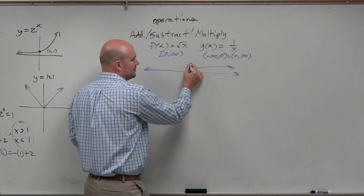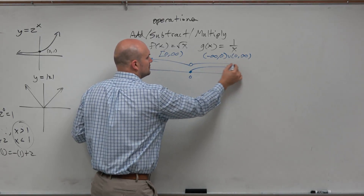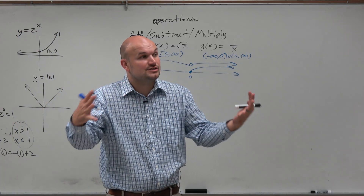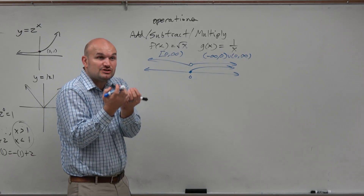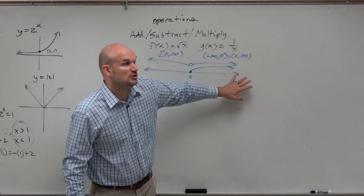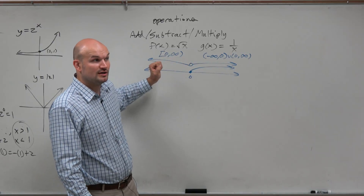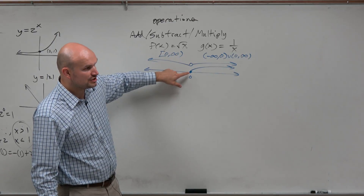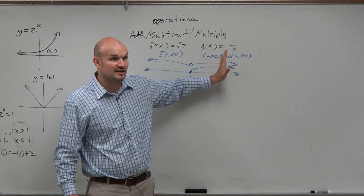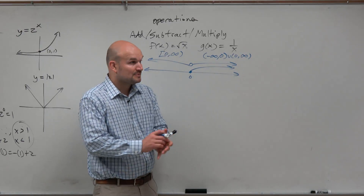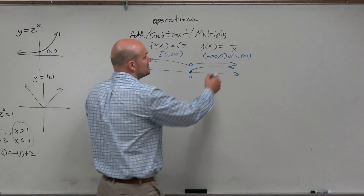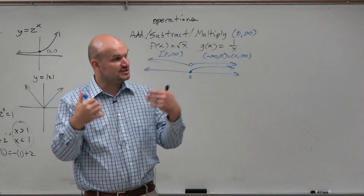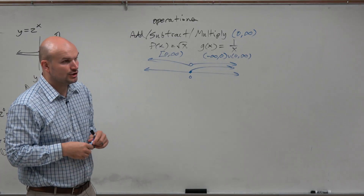This domain is for all real numbers except for 0. So it doesn't matter if I add, subtract, or multiply — obviously the answer is different, but the domain is going to be the same: the intersection of these two domains. We look at this graph of both domains and ask where do they intersect, where are they both defined? Not for negative numbers — only g(x) is defined there. Not at 0 — only g(x) is defined. But for all positive values, both functions are defined. So the domain of that operation is the intersection of the two restrictions, which in this case is 0 to infinity.